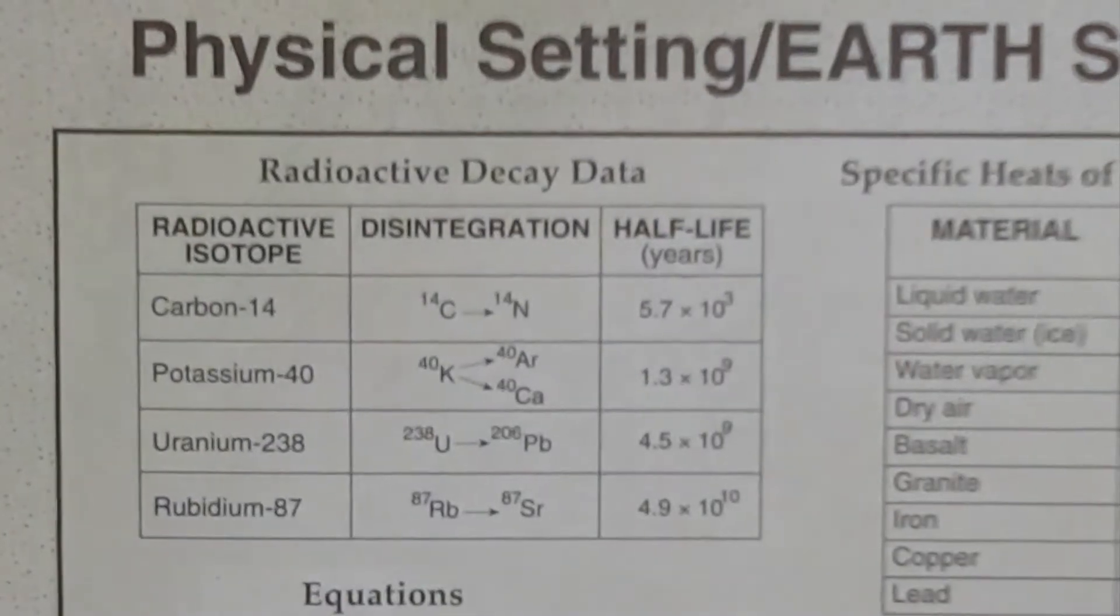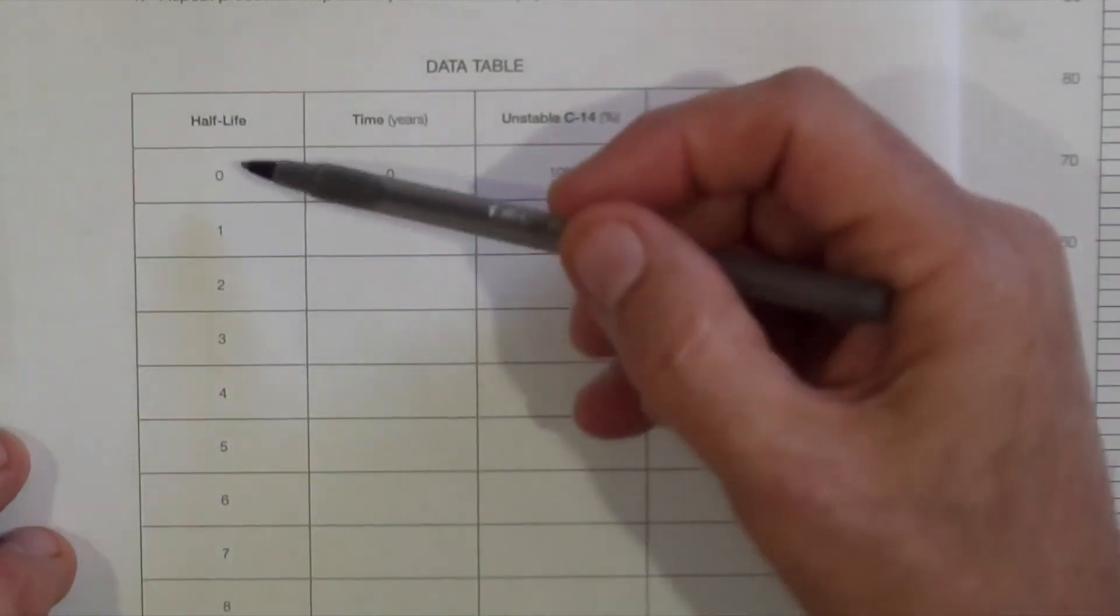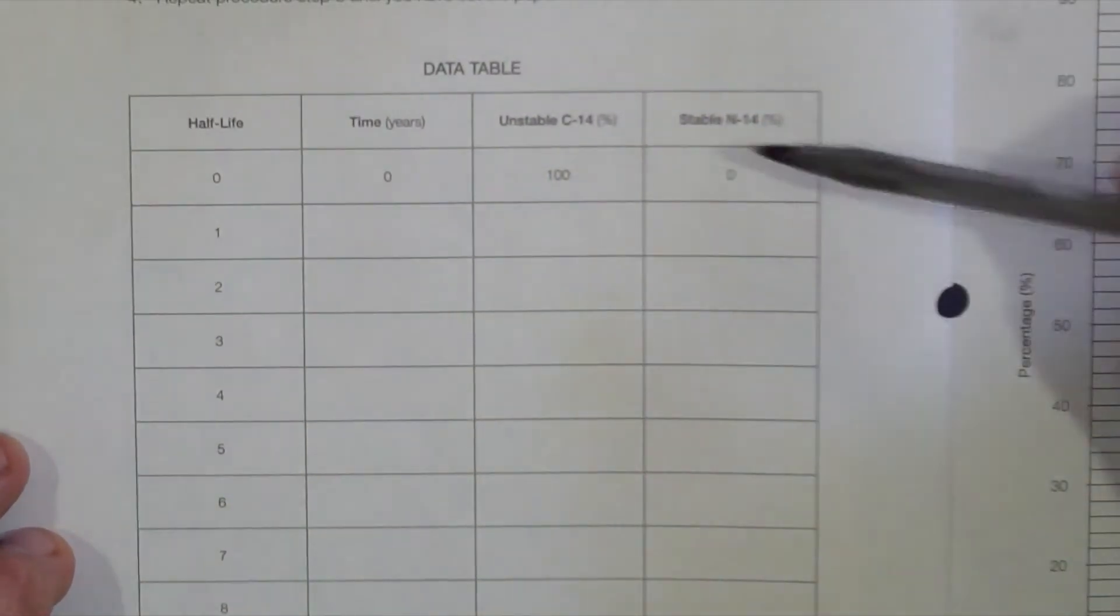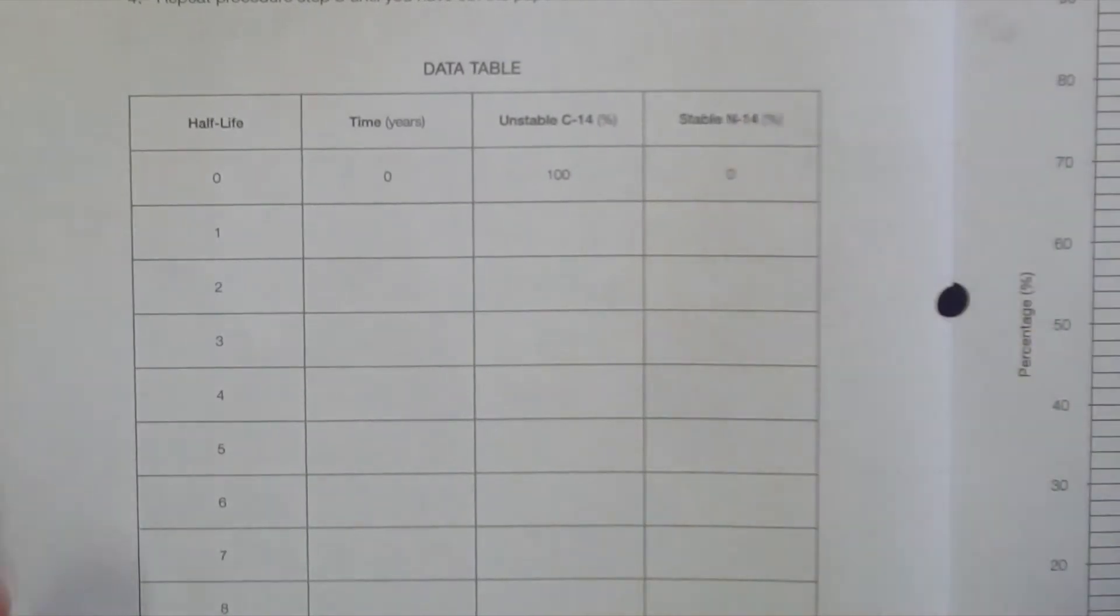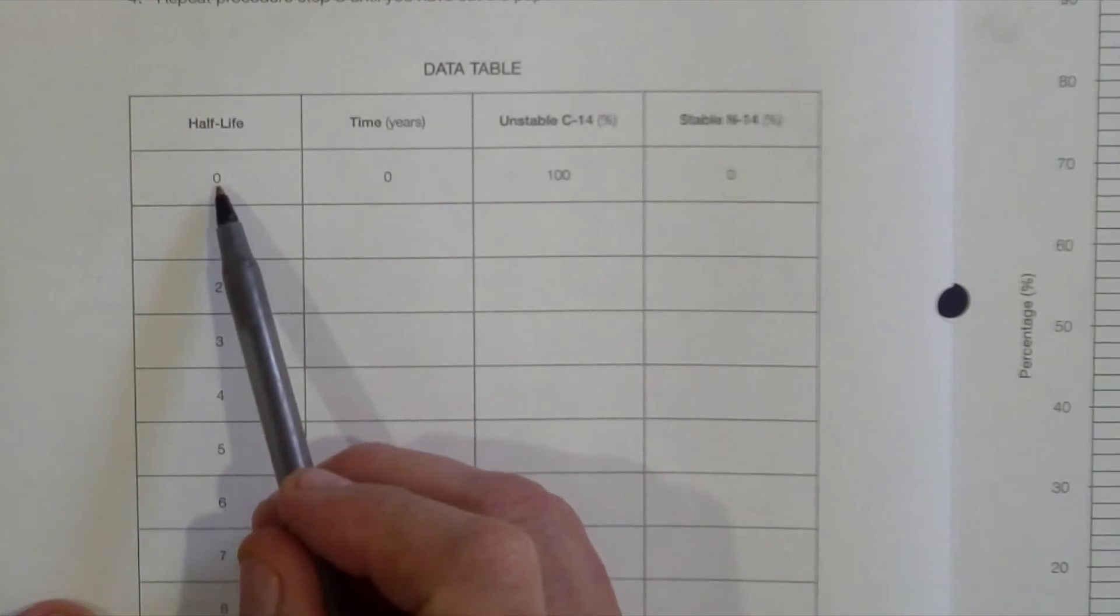We take a look at this chart. We start off with half-lives, time, unstable Carbon-14, and the decay product, the stable Nitrogen-14. At current time zero years, we haven't experienced any half-lives. We start off with 100% Carbon-14 and 0% Nitrogen-14.